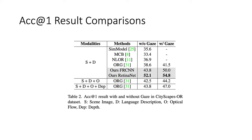Besides that, we also compared several language-based object referring methods: SIM model, MCB, and NLOR. Our RetinaNet is the proposed one-stage object referring model, and our FRCNN applies the proposed idea to a two-stage object detector. The proposed one-stage object referring system is a clear winner overall, considering all models using only the scene image, the language description, and the gaze. The proposed model outperforms the previous state-of-the-art by 13.3 percent. Even compared to the previous state-of-the-art with two additional modalities, the proposed method also wins by 7.8 percent.